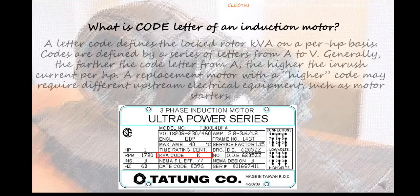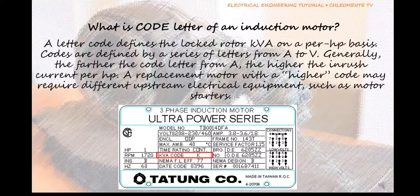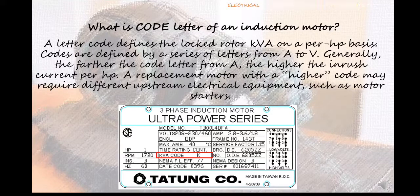A letter code defines the locked rotor kVA per HP basis. Codes are defined by a series of letters from A to V generally. The farther the code letter from A, the higher the inrush current per horsepower. A replacement motor with a higher code may require different upstream electrical equipment, such as motor starters.